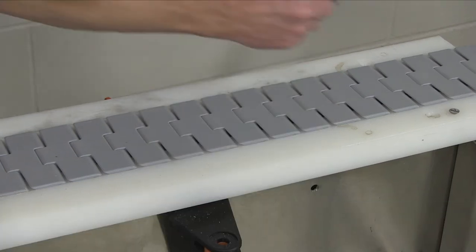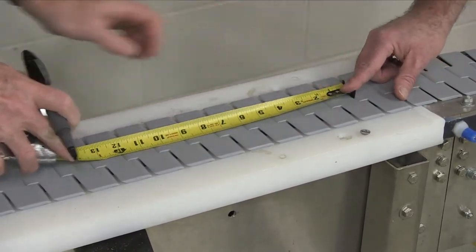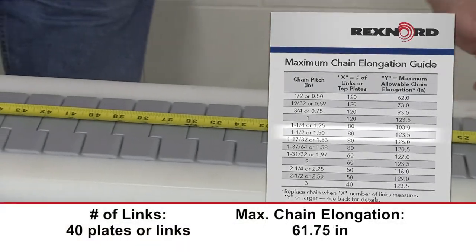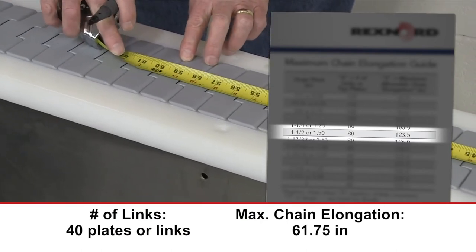Measure the chain starting at the bottom of the first plate and proceed to the very end of the last plate. The maximum allowable chain elongation is 3%, shown in this table. If your chain is longer than 3%, you need to change your chain.